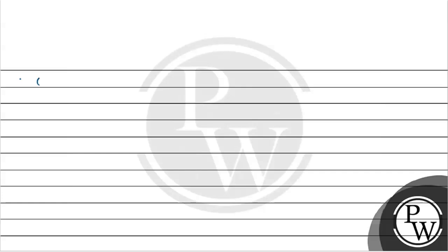For continuity: a function is continuous at a point x=a if its limit as x approaches a of f(x) equals f(a). For the continuity check, we have to evaluate the left-hand limit, right-hand limit, and the value of the function.